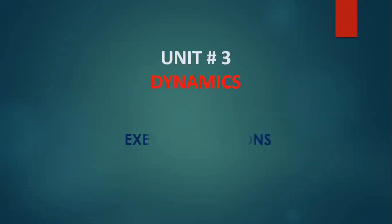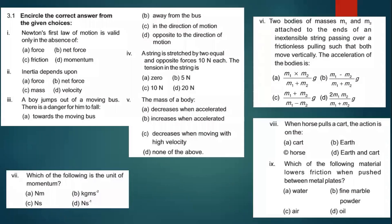Assalamu alaykum students, today we will discuss Unit 3 exercise questions. Question 3.1: encircle the correct answer from the given choices. Part one: Newton's first law of motion is valid only in the absence of — option B is the right answer — net force. We have discussed that if a body is at rest it will remain at rest, and if it is in uniform motion it will remain so, until a net force acts.